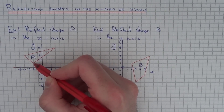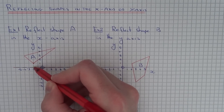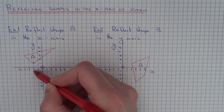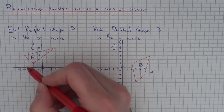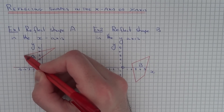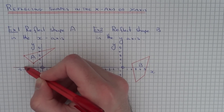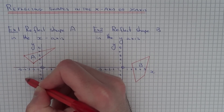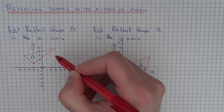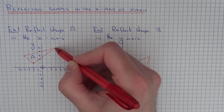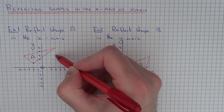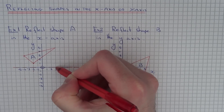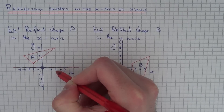Let's start with this corner here. This corner is one square away from the mirror line, so on the other side it will be one square away. This corner here is three squares away from the x axis, so on the other side it will be three squares away. And our final corner up here is five squares away, so that will be five away from the mirror line.